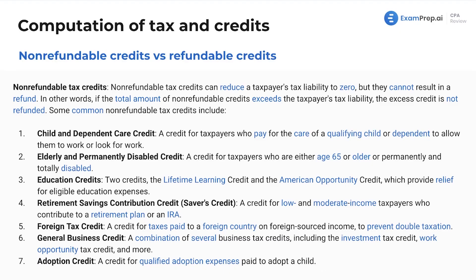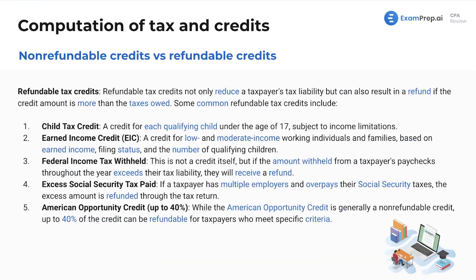We want to promote good social causes such as adopting children and getting people to save for retirement. Now for refundable tax credits: refundable tax credits not only reduce the liability, but can also result in a refund if the credit amount exceeds the tax owed. So if we have a $10,000 credit and only owe $2,000 in taxes, we'll get a check for $8,000 from the IRS.